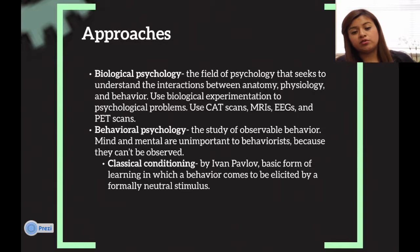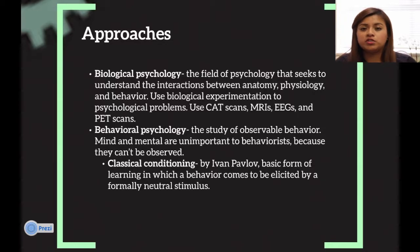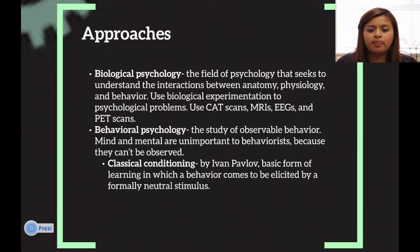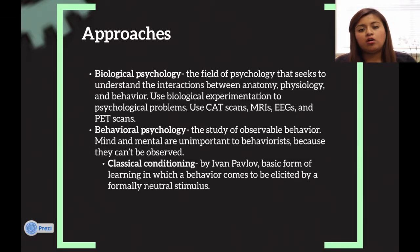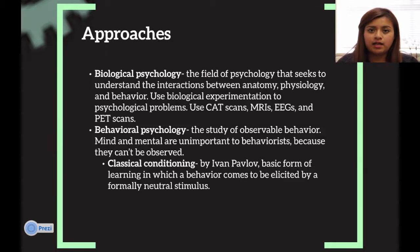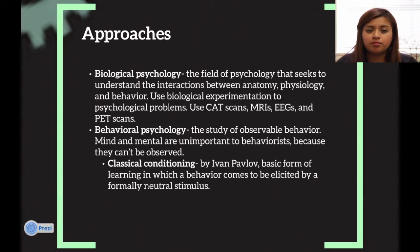Now we're going to talk about the approaches. Biological psychology is the field of psychology that seeks to understand the interaction between anatomy, physiology, and behavior. It uses biological experimentations for psychological problems. Tools used include the CAT scan, EEGs, MRIs, and PET scans.